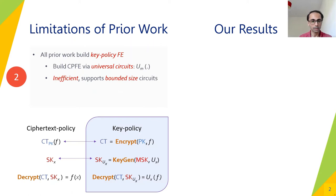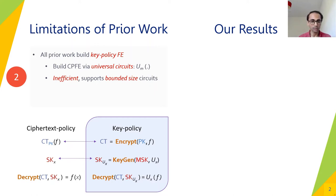The second limitation is that almost all prior work builds key policy functional encryption where secret keys correspond to functions or policies. We can try to build ciphertext policy FE, the dual notion, where a function is hidden inside the ciphertext and secret keys are generated for public inputs. One approach is via universal circuits switching the roles of functions and inputs, but this leads to inefficiency and supports only bounded size circuits. The only exception is the scheme by SS10, which gives a single-key-secure ciphertext policy FE scheme directly from public key encryption and garbled circuits.